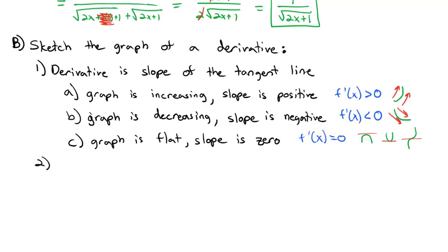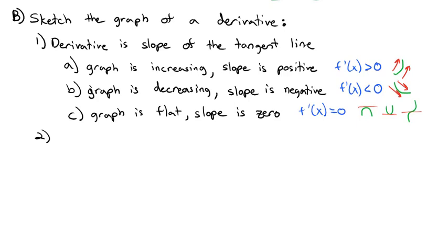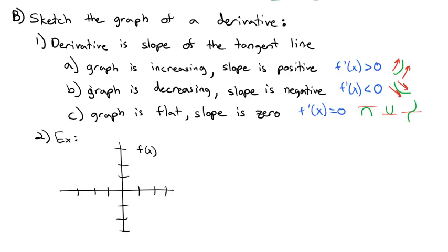Let's look at a graph example. Say we have a function f of x with a point at negative 3, negative 2, another at negative 1, comma 2, and another at 2, comma negative 2. We connect them coming in from the top, hitting the first point and going up, hitting the second point and going down, making a trough where we level out and keep going down at the third point.